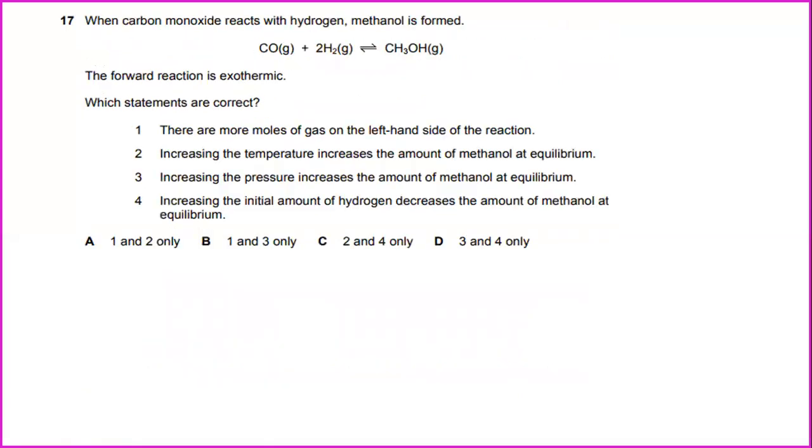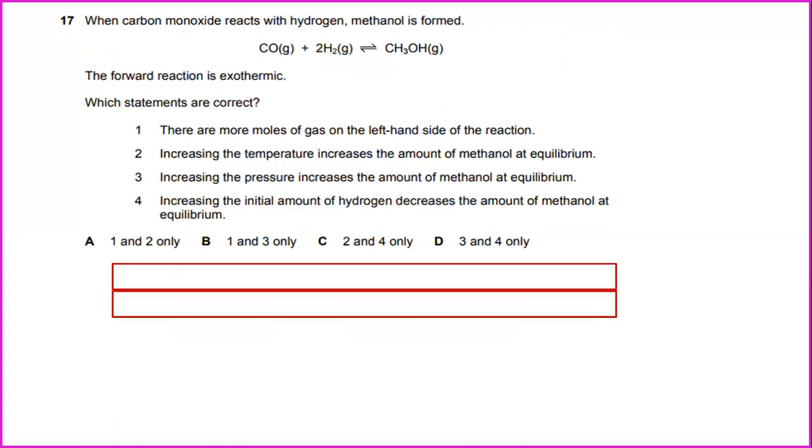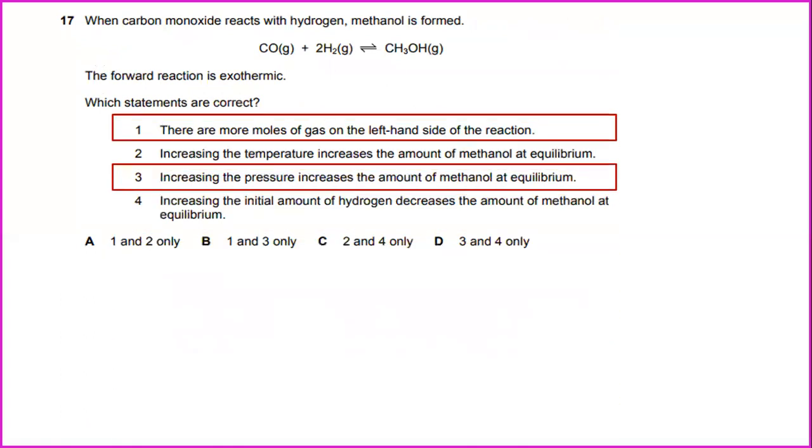When carbon monoxide reacts with hydrogen, methanol is formed. The forward reaction is exothermic. Which statements are correct? There are more moles of gas on the left-hand side of the reaction - correct. And number 3, increasing the pressure increases the amount of methanol at equilibrium. The answer will be B.